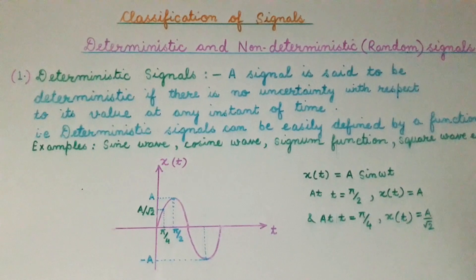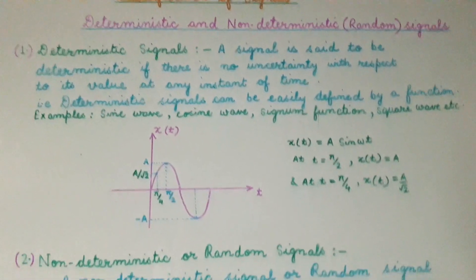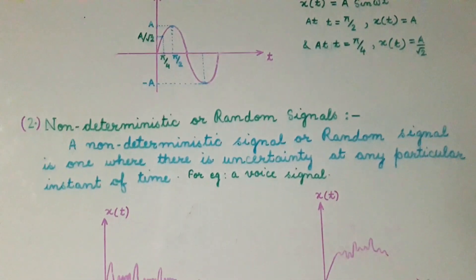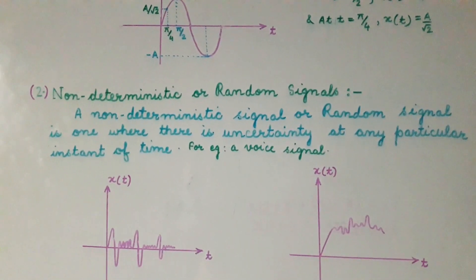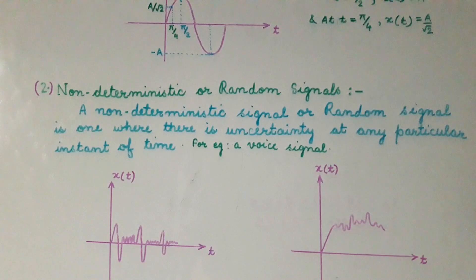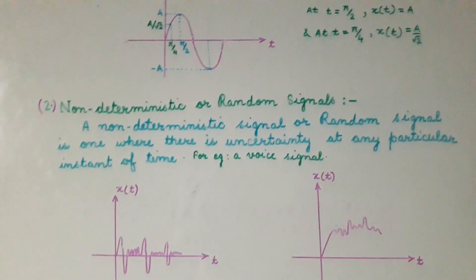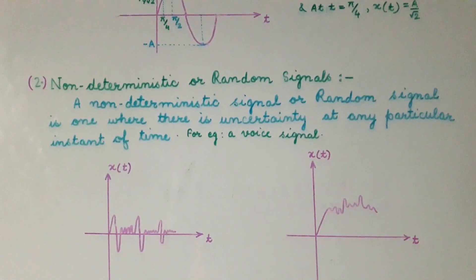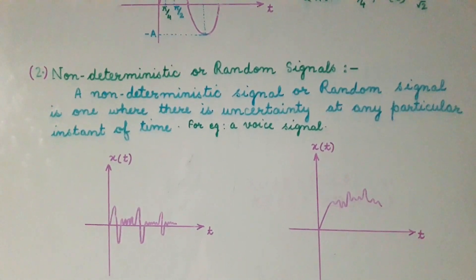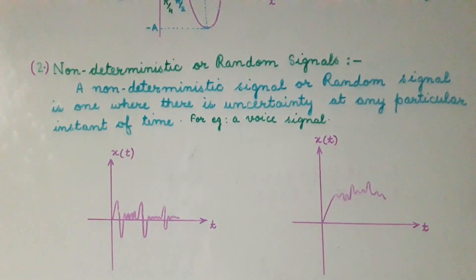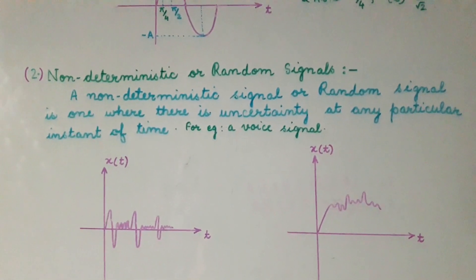Now let us see what is a non-deterministic signal or a random signal. A non-deterministic or random signal is one where there is uncertainty at any particular instant of time. An example of such a signal is a voice signal. So if a signal has uncertainty at any instant of time, then one can say that it is a non-deterministic signal.